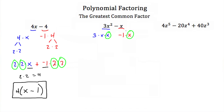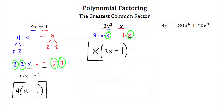When we factor that x out we put it on the outside, and everything remaining goes inside the parentheses. We'll have x times whatever's left in the first term — we've factored out an x, so we're left with 3x. Then we add what's left in the second term after factoring out x, which is just negative 1. So the factored form of 3x squared minus x is x times 3x minus 1.